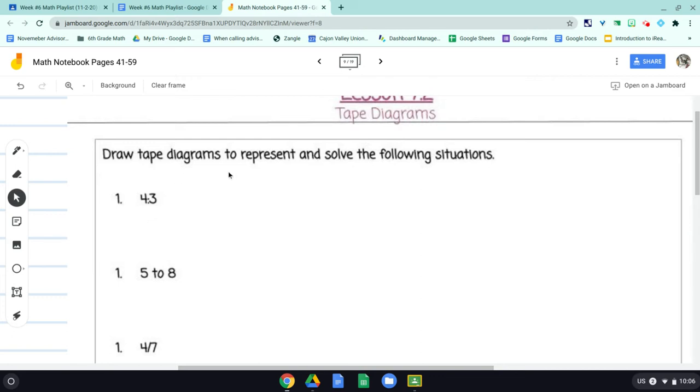It says here, draw tape diagrams to represent and solve the following situation. So we have the first ratio we're going to represent, which is 4 to 3. So I would write this as 4 to 3, possibly like this if I wanted to. And I'm going to change the colors a little bit here. I'm going to make 4 in green and 3 in blue. So I would represent 4 as 4 pieces of equal size tape. There we go.